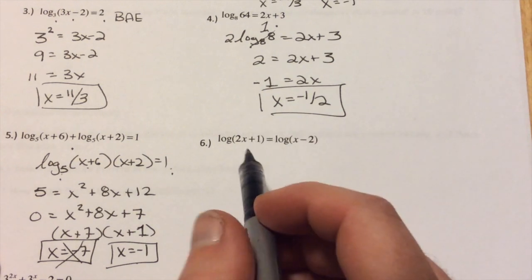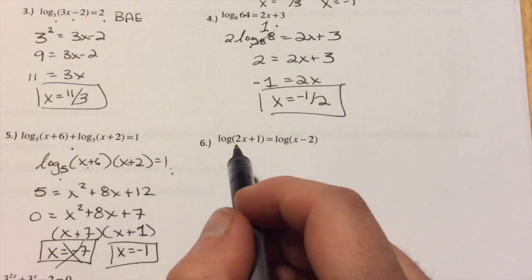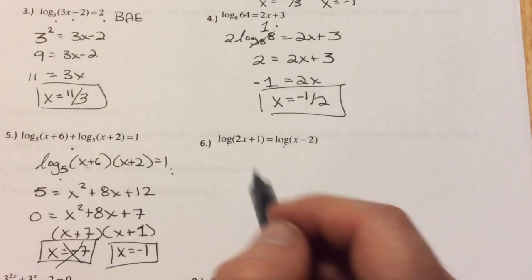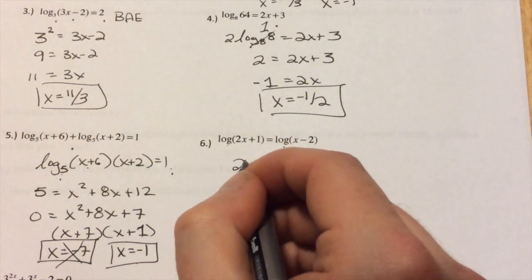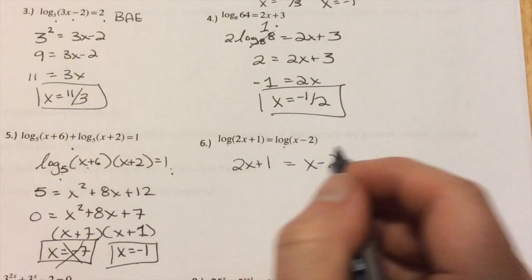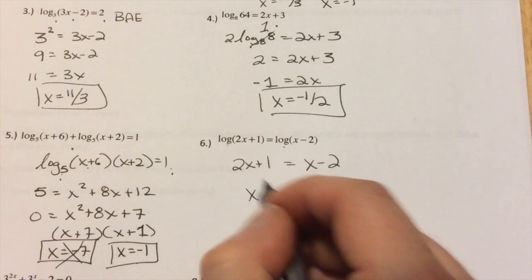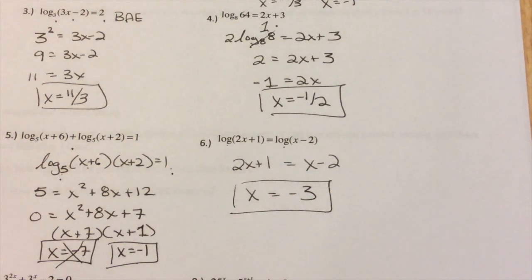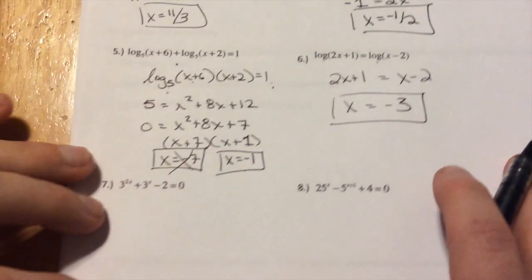Last up for these solving problems. I have a log on one side and log on the other. They have the same base, so that means the insides have to be equal. So 2x plus 1 equals x minus 2. This is a simple solve. Subtract x. Subtract 1. So a problem can be as easy as that.